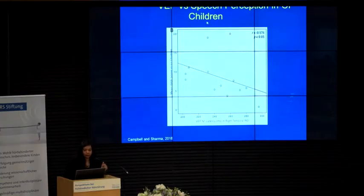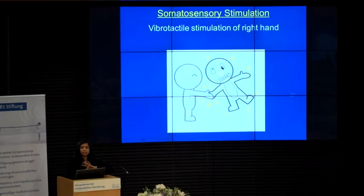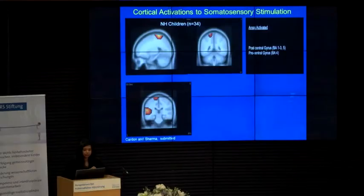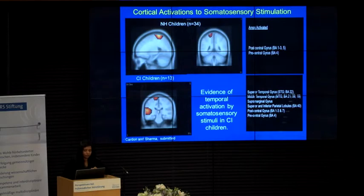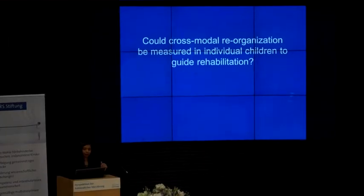There is a moderate correlation between speech in noise performance and the amount of cross-modal plasticity in children with cochlear implants — the more cross-modal plasticity, the worse the performance with implants. And it's not just vision: the tactile somatosensory modality also recruits auditory areas. When we present vibro-tactile stimulation, in normal hearing children we see activation of post-central gyrus somatosensory cortex, while in children with cochlear implants we see additional activation of auditory cortex. The question is: can we use this to guide decision-making in individual children?